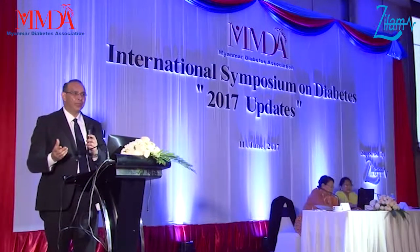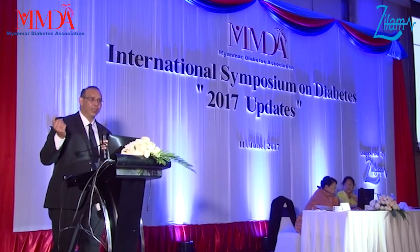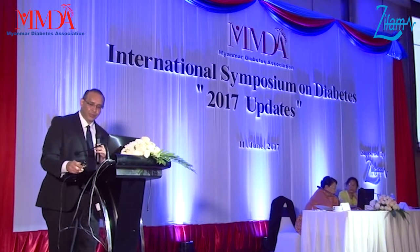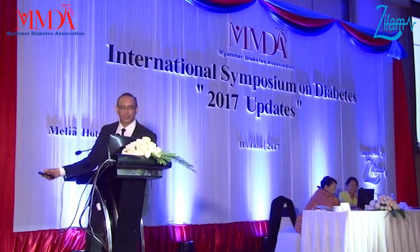The English word is 'phenotype' — phenotype means the sum of all external attributes. A medical phenotype would be a patient's medical history and physical examination findings. If we adapt this term, we use the word 'glucophenotype,' which means all angles of the medical history, physical examination, and glucose values — this is a particular person's glucophenotype.